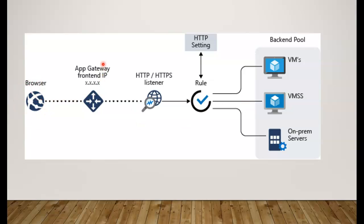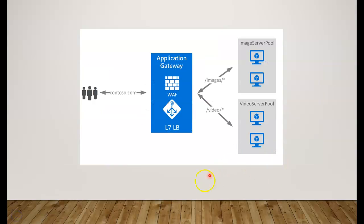In the Application Gateway flow, when your browser hits the frontend IP of the gateway, traffic goes through an HTTP or HTTPS listener. It verifies the rules to determine which backend pool the request should go to. You can also include WAF — Web Application Firewall — which provides centralized protection for your web applications from common exploits and vulnerabilities.